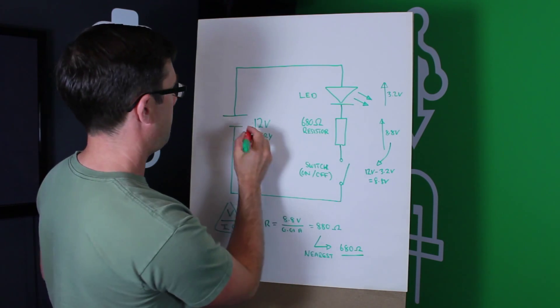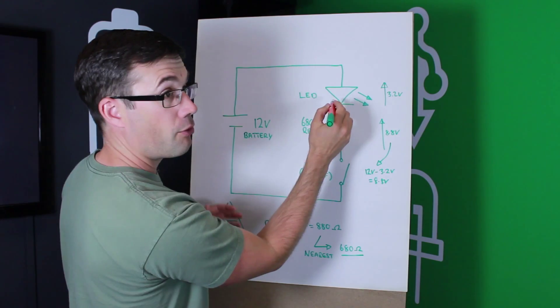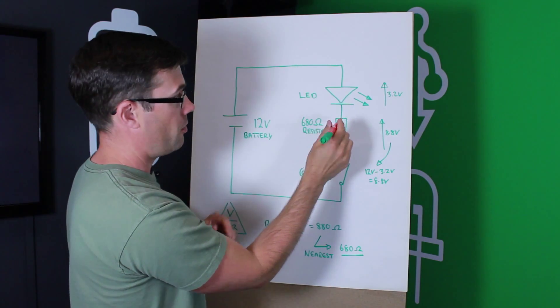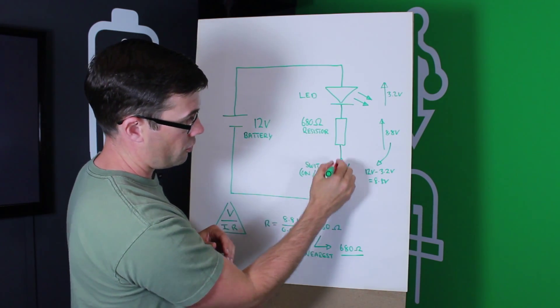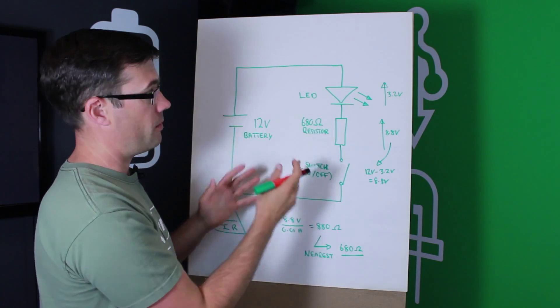So what happens is when we turn it on, current flows out of the battery, round to the LED, through the LED, lighting the LED up, through this resistor, through the switch, and then back to the battery. It's doing this all the time, and the LED is lit.